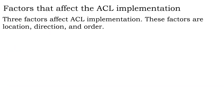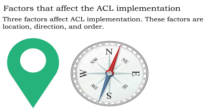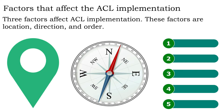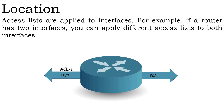Three factors affect ACL implementation: these factors are location, direction, and order. Let's discuss these factors in detail. Location: access lists are applied to interfaces. For example, if a router has two interfaces, you can apply different access lists to both interfaces.